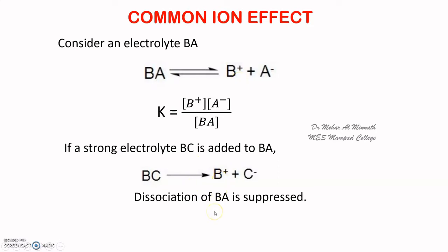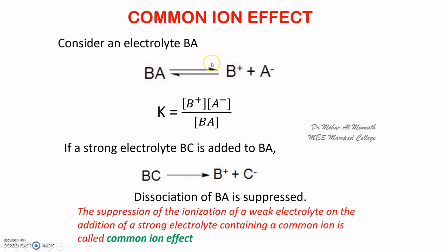So when you add a strong electrolyte to another electrolyte, the ionization of the weak electrolyte is suppressed. That is called the common ion effect. Remember, both the weak electrolyte and strong electrolyte will have a common ion. Common ion effect is the suppression of the ionization of the weak electrolyte on adding a strong electrolyte containing a common ion.